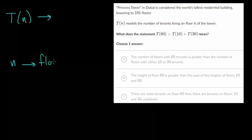So this is the floor number of the tower, and T of N models the number of tenants living on that particular floor. So T of N is the number of tenants on floor N.